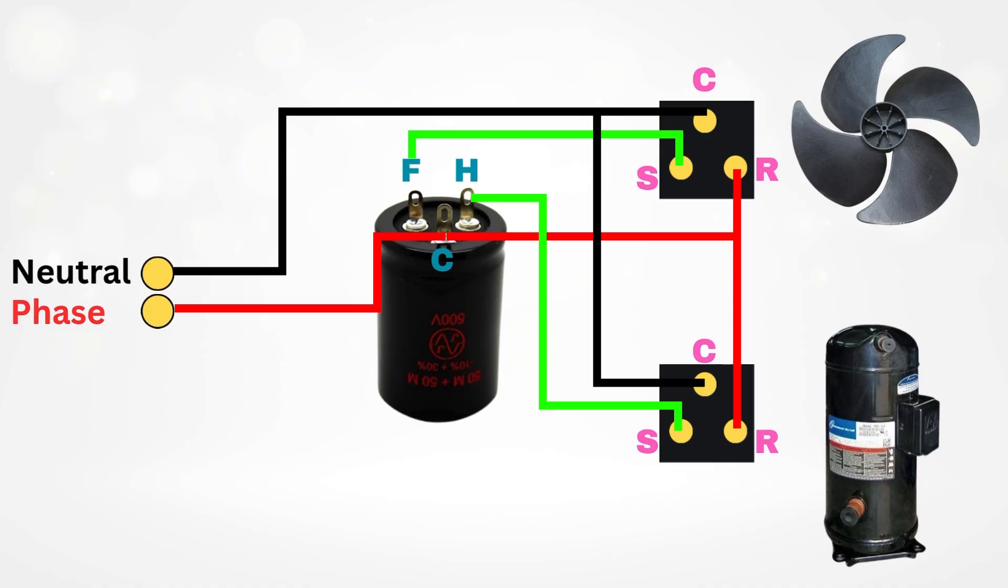So that's a full explanation of how a dual capacitor works in an air conditioner's outdoor unit. It's a smart and compact way to handle two motors, the compressor and the fan motor, using just one component.